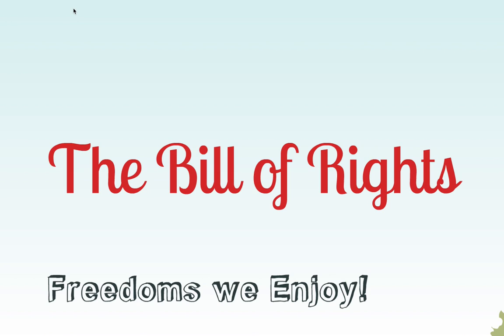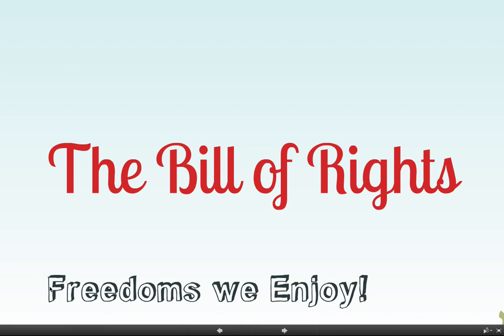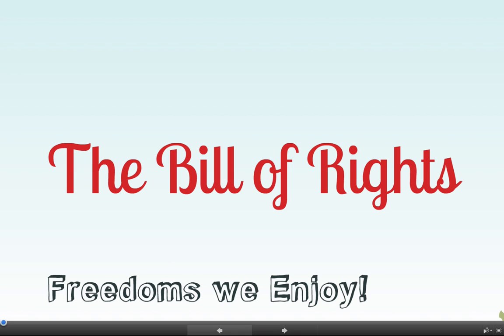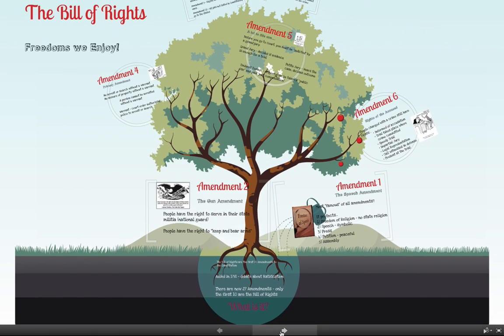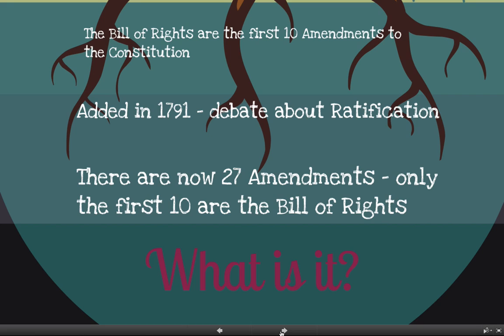This video is called the Bill of Rights, and we're going to be talking about some basic freedoms that we enjoy as American people. Here is our Bill of Rights tree. The Bill of Rights are the first ten amendments to the Constitution. An amendment means a change or an addition — basically stuff that has been added on to the Constitution since it was written back in 1787.